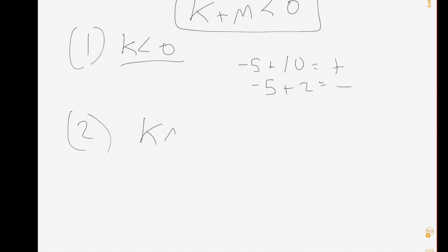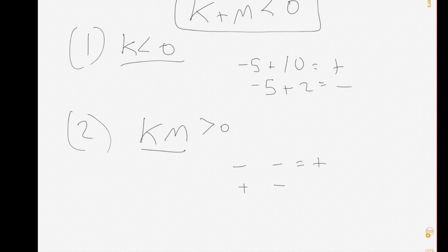Now let's look at number two: km is greater than zero. How can k times m be greater than zero? That's only possible if both k and m are negative numbers, because a negative times a negative is a positive, or if they're both positive numbers, because a positive times a positive is a positive. So if that's all we know — that km is greater than zero — we've limited it down to either they're both negative or they're both positive. If both positive, the sum is positive, so number two alone is not sufficient.